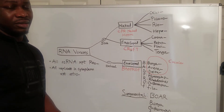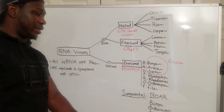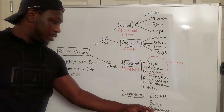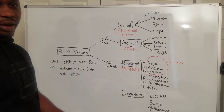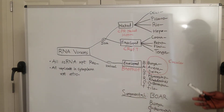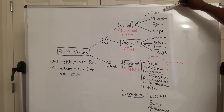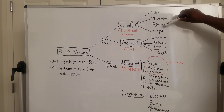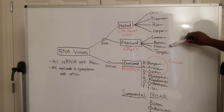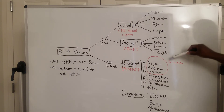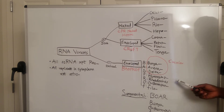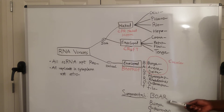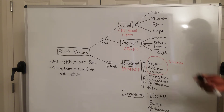Some RNA viruses are segmented — they have multiple segments. You can remember the segmented RNA viruses using the mnemonic BOAR: B is bunyavirus, O is orthomyxovirus, A is arenavirus, and R is reovirus.